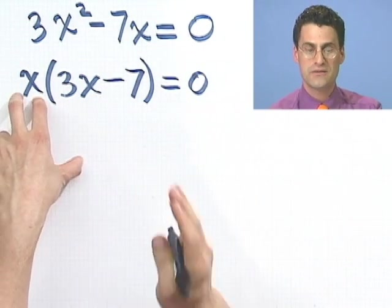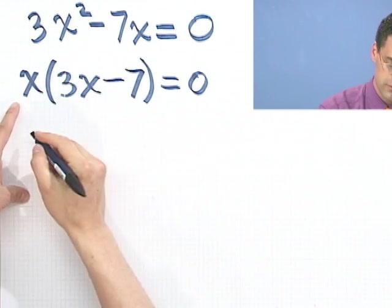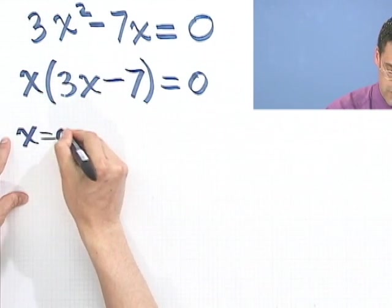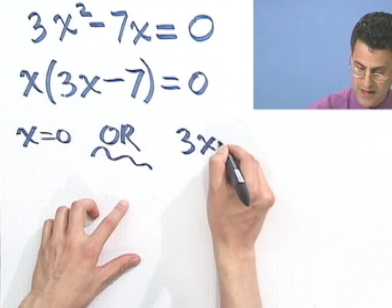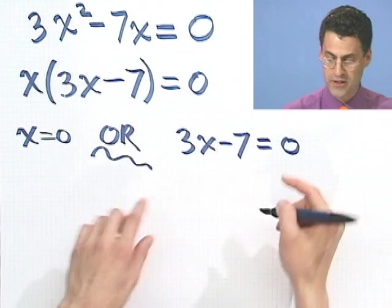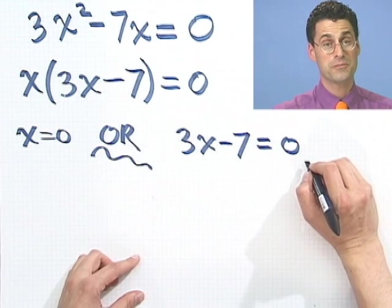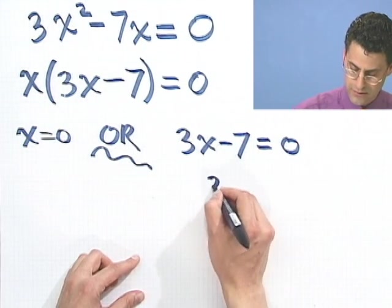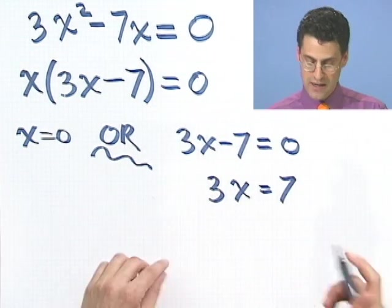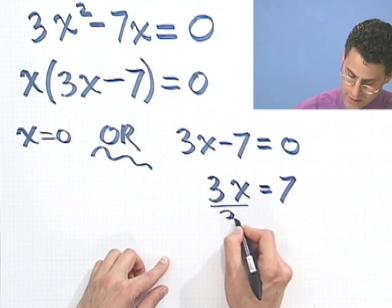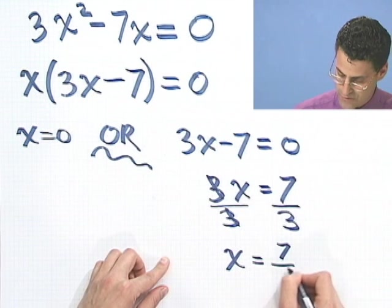The only way that can happen is if either this thing is 0 or that thing is 0. Well, that means that either x equals 0 or, what's the other possibility? This thing equals 0. So 3x minus 7 equals 0. And now I'm going to go off and solve this little linear equation. I would bring this minus 7 to the other side, it becomes a plus 7, or add 7 to both sides. And I see 3x equals 7. And now I divide both sides by 3. And if I divide both sides by 3, the 3's now here cancel, and I see x would equal 7 over 3.